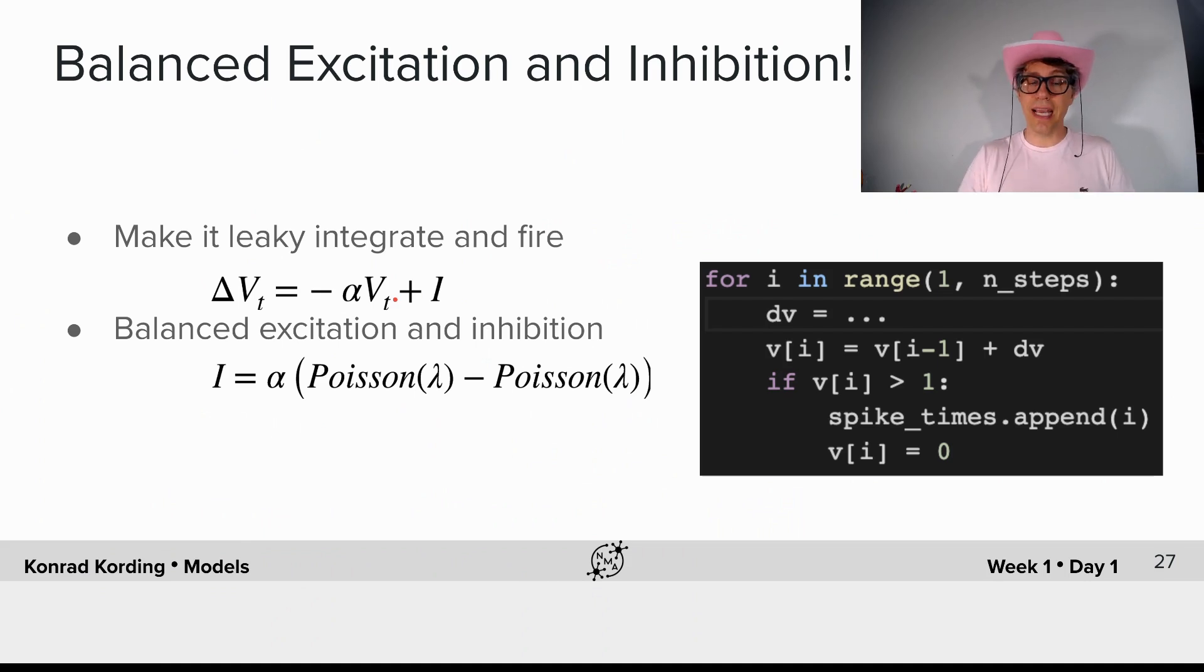The second one is, we will have balanced excitation and inhibition. So now, the current is not just positive, but there's going to be a random number of spikes coming in from excitatory neurons which produce positive current,